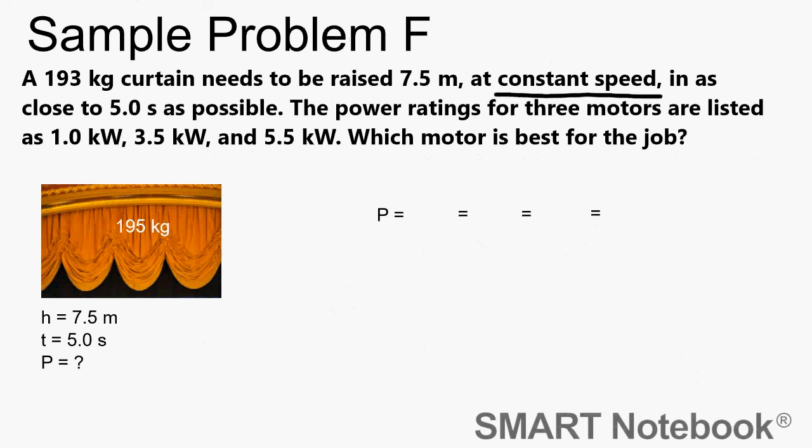So at a constant speed, and it wants to be up in as close to five seconds as possible. The power ratings for three motors that you can buy are listed as one kilowatt, three and a half kilowatts, and five and a half kilowatts. Which motor is best for the job? So we have the curtain picture here. It's going to be raised the height of seven and a half meters in about five seconds or as close to five seconds as possible.